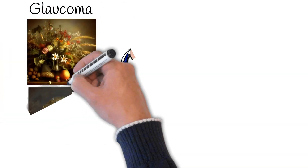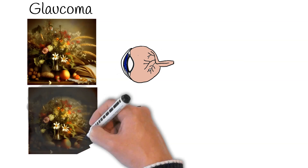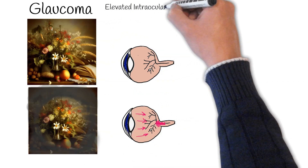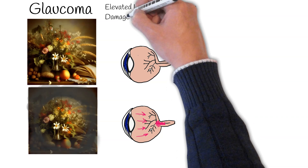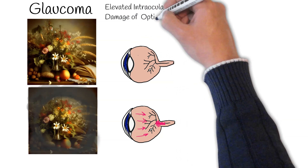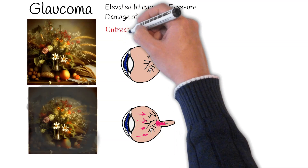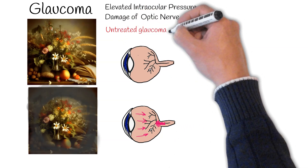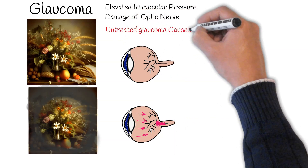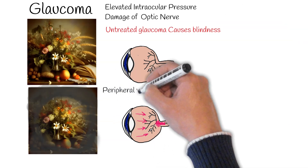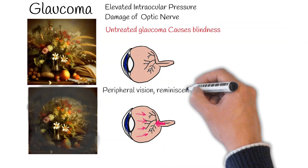Another disease which causes progressive loss of eyesight is glaucoma. Its main characteristic is optic nerve damage due to abnormally high intraocular pressure. Untreated glaucoma causes blindness. Initially there are no symptoms, but as glaucoma advances it causes loss of peripheral vision, reminiscent of tunnel vision.